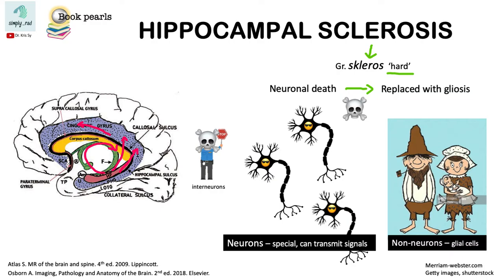We have to understand the imaging findings of this condition because Hippocampal sclerosis or mesial temporal sclerosis is the most common cause of temporal lobe epilepsy.